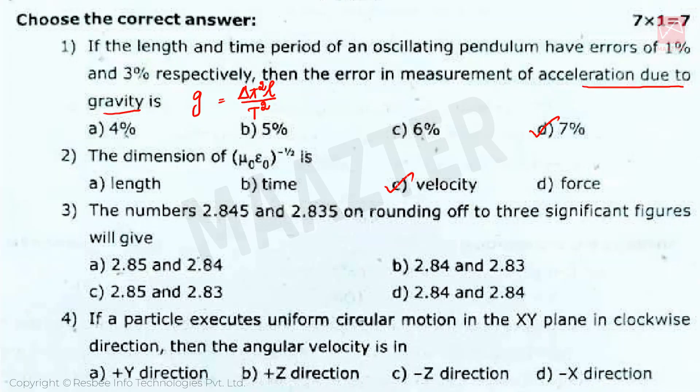Third question is: The numbers 2.845 and 2.835 on rounding off to 3 significant figures will give. Correct answer is option A, 2.85 and 2.84. Rounding off means if the last digit after decimal point is above 5, add one to the previous digit. That's why 2.85.